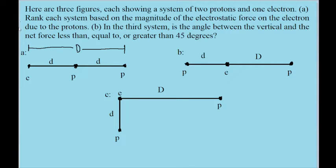System A has the electron on the left and the two protons on the right. This second one, system B, has the electron in the middle and the protons on either side. The third one has a right angle type situation, where one proton is some distance to the right of the electron, and the other proton is some shorter distance below the electron. The longer distance is a capital D, and the shorter distance is a lowercase d. System A implies that big D is twice the length of little d.